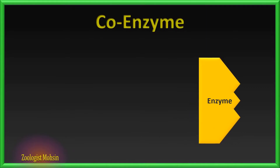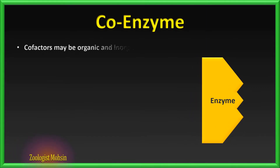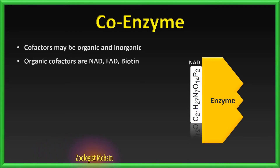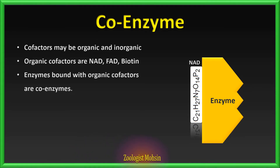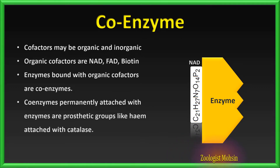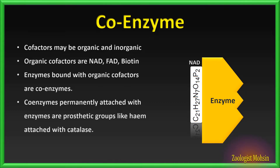What are coenzymes? If enzymes are bound with organic cofactors, these are called coenzymes. For example, nicotinamide adenine dinucleotide (NAD), flavin adenine dinucleotide (FAD), and biotin are coenzymes. Now, if these organic components are permanently or tightly attached with the enzyme, they are called prosthetic groups. For example, the heme group attached to the enzyme catalase is prosthetic in nature.